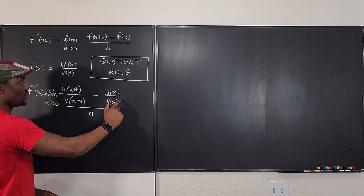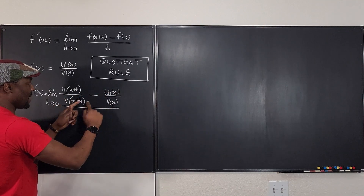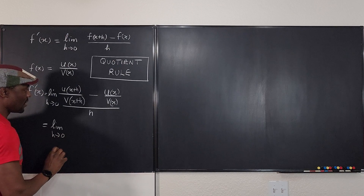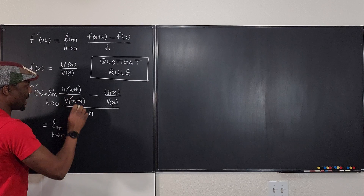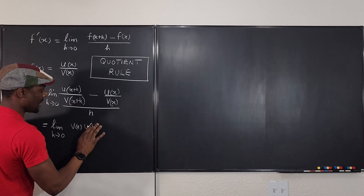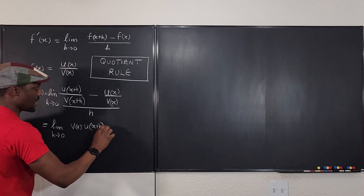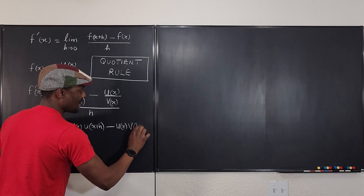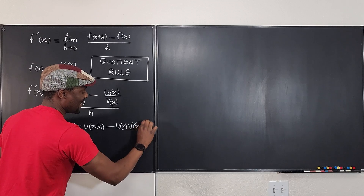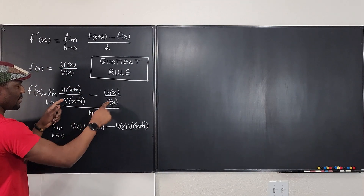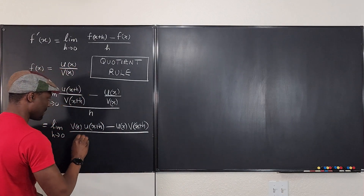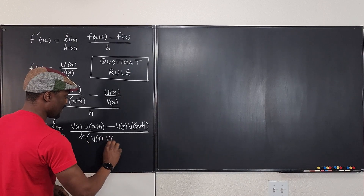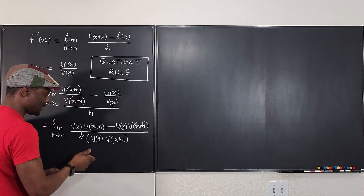What can we do? Well, we can put these two fractions together into a single fraction by cross-multiplying. This gives us the limit as h goes to zero of v of x multiplied by u of x plus h, minus u of x multiplied by v of x plus h, all over h times v of x times v of x plus h.